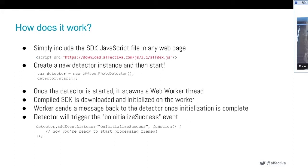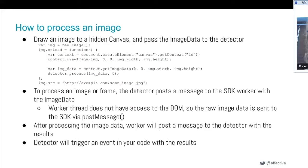To use it in your web page, you include our aftex.js file, create a photo detector in JavaScript, and hit start. Once started, our SDK spawns a web worker thread, downloads the SDK, and initializes it on that worker thread so all computations happen off the main thread. Once downloaded and initialized, the worker sends a message back to the detector indicating it's ready, and the detector triggers an event in your code saying it's ready to process frames.